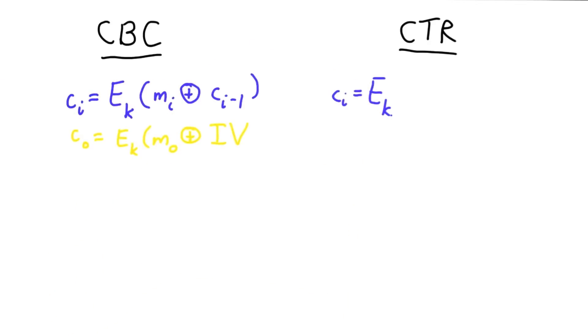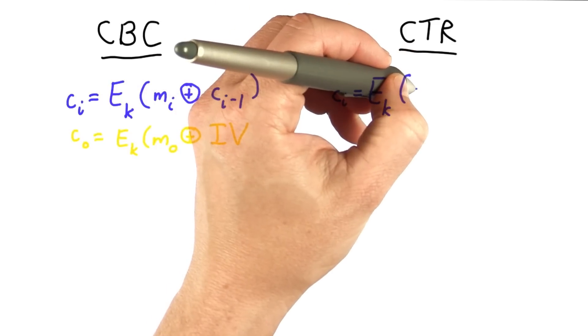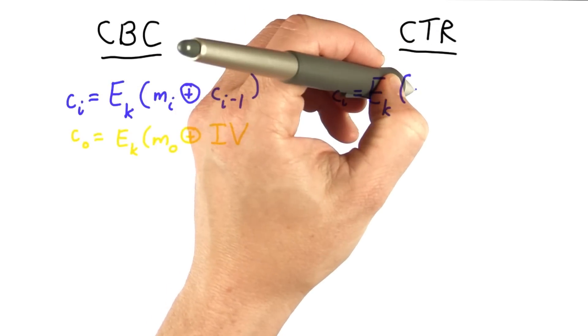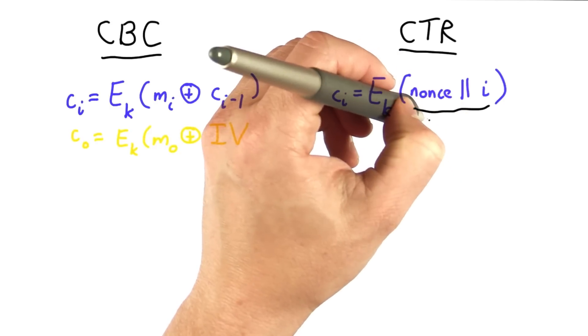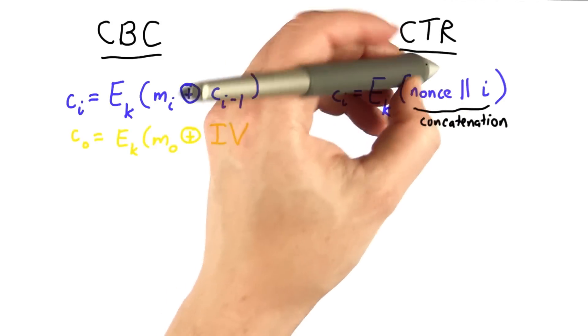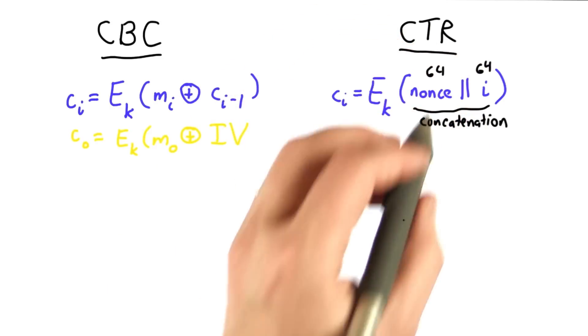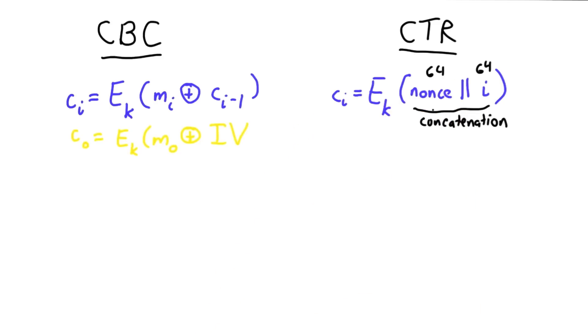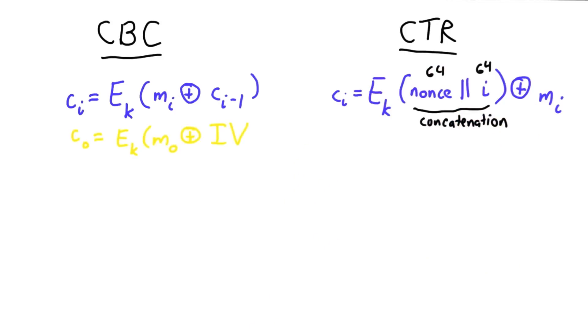With counter mode, the ith ciphertext block is the result of encrypting the value of i, that's our counter, with some nonce. I'm writing this as concatenation. We have 64 bits here pasted next to those 64 bits for the counter and the nonce. That is XORed with the corresponding message block.